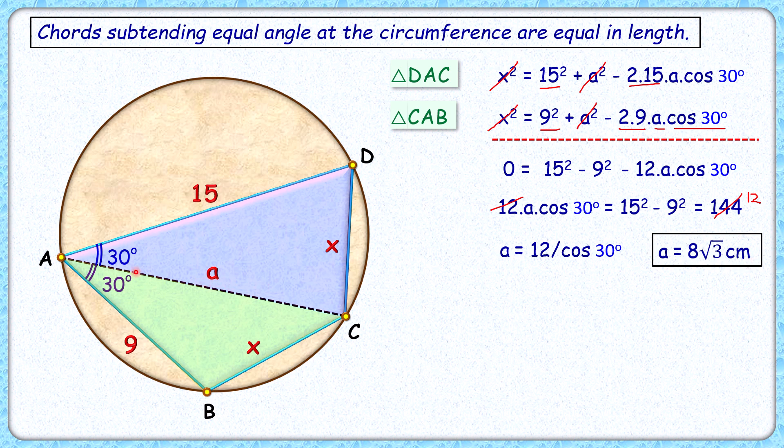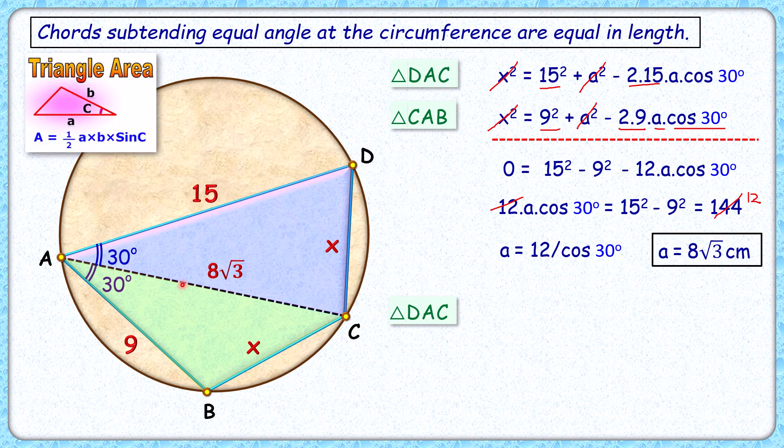Now we have the value of a - AC length is 8√3 cm. The area of the quadrilateral is what we have to find, and it's the sum of the areas of these two triangles. The area of a triangle is ½·a·b·sin C, where C is the angle between sides a and b.